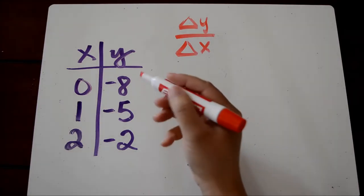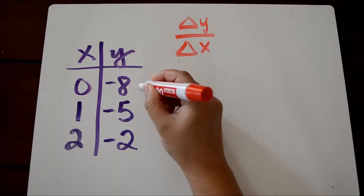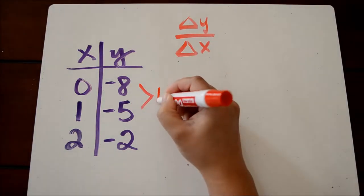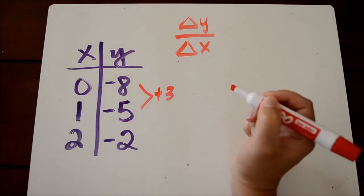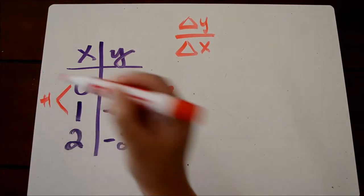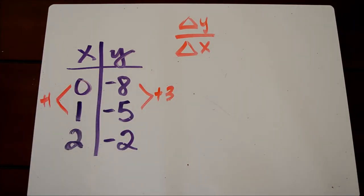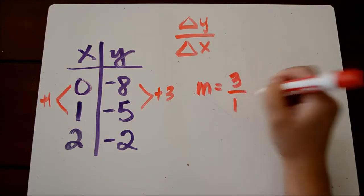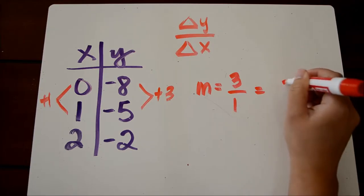So we're going to find the change from negative 8 to negative 5. To get from negative 8 to negative 5, we have to add 3. And to find the change in x's, to get from 0 to 1, we have to add 1. So our delta y over delta x is 3 over 1, which can be reduced to 3.